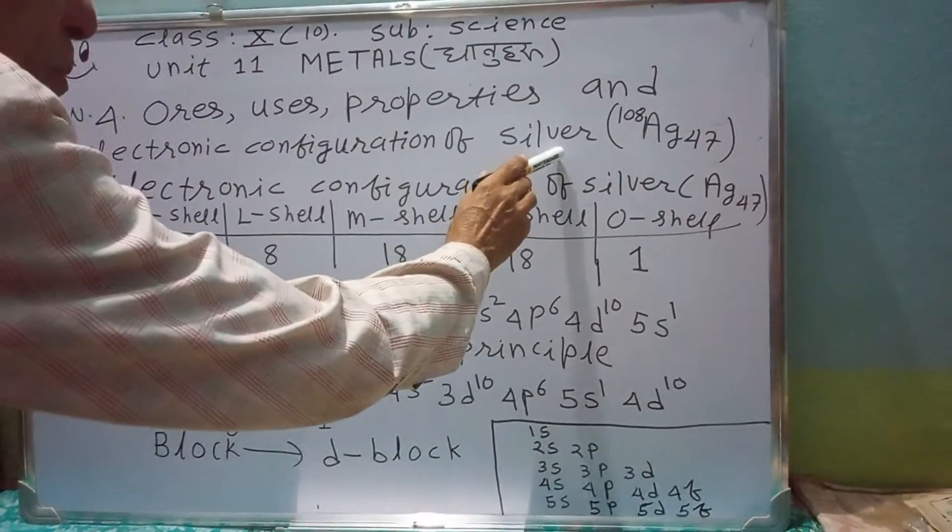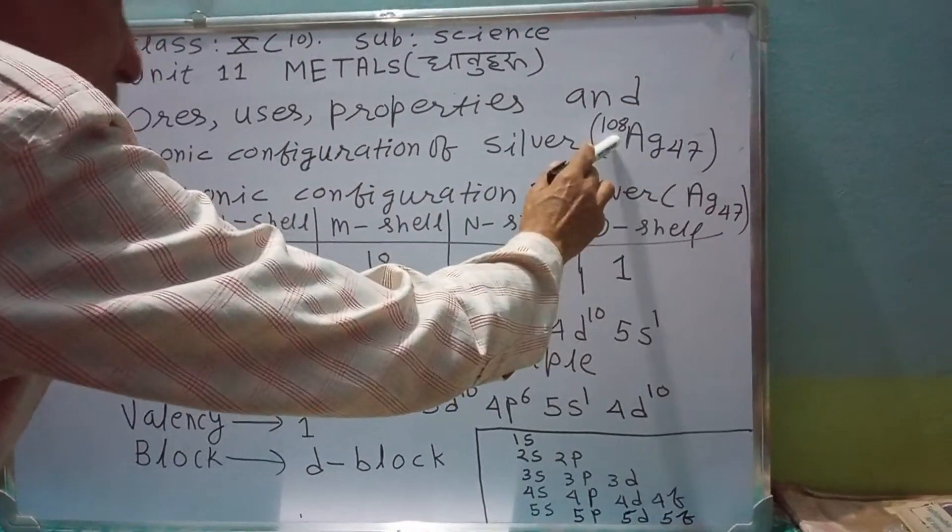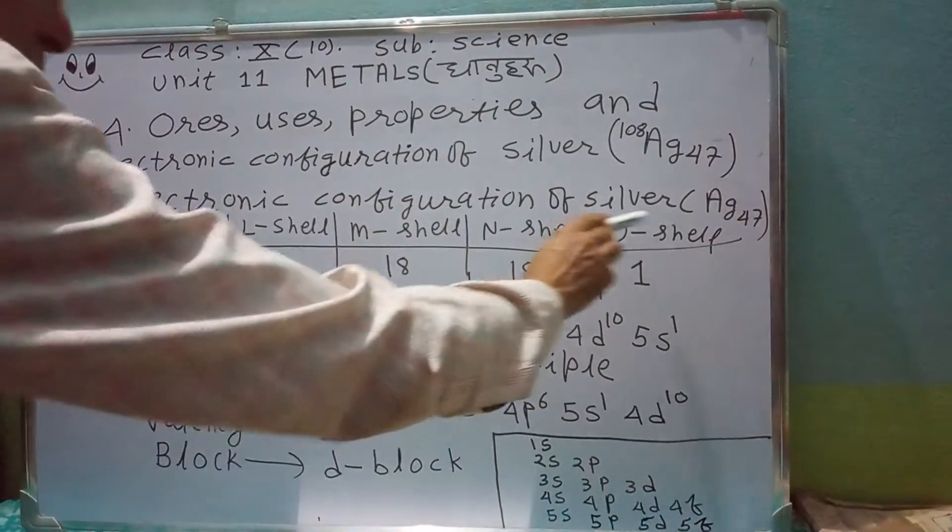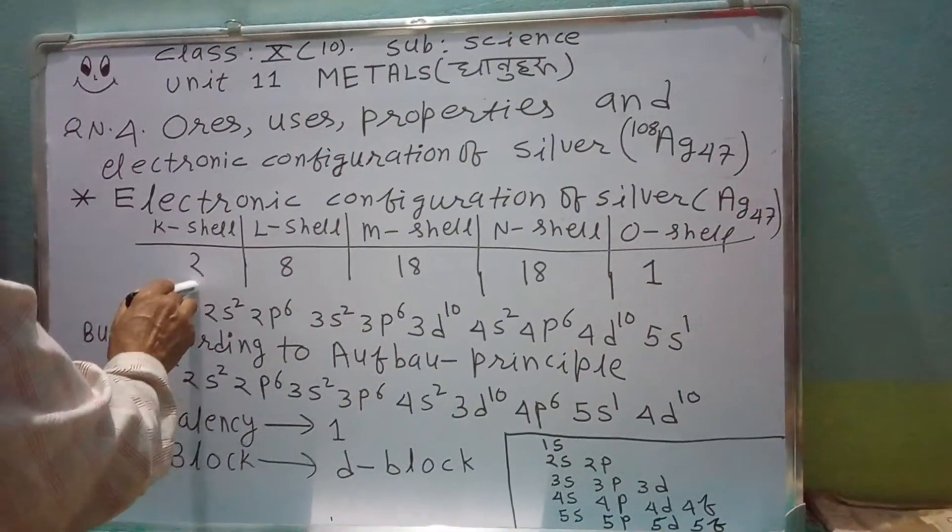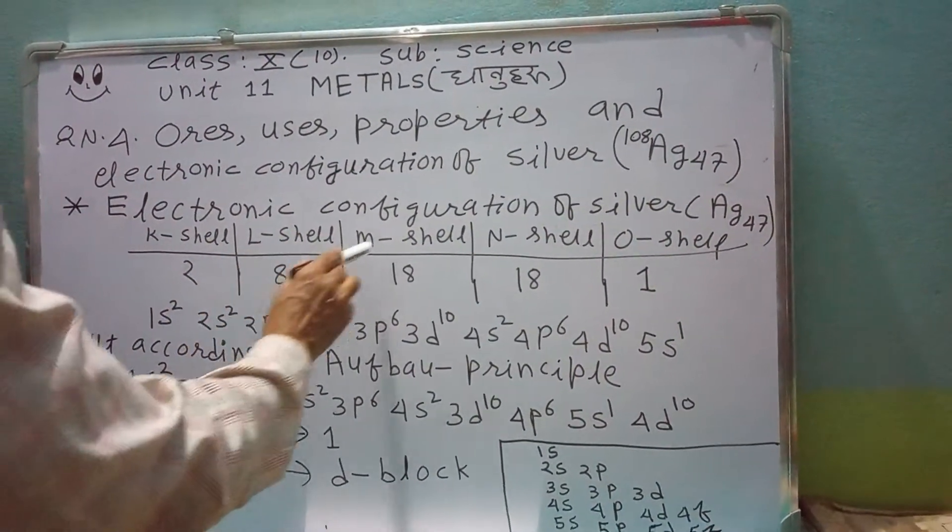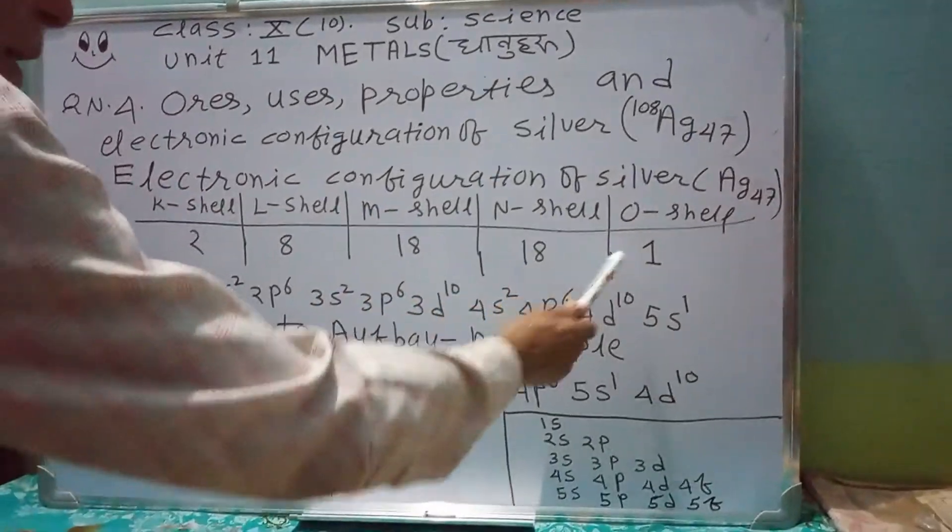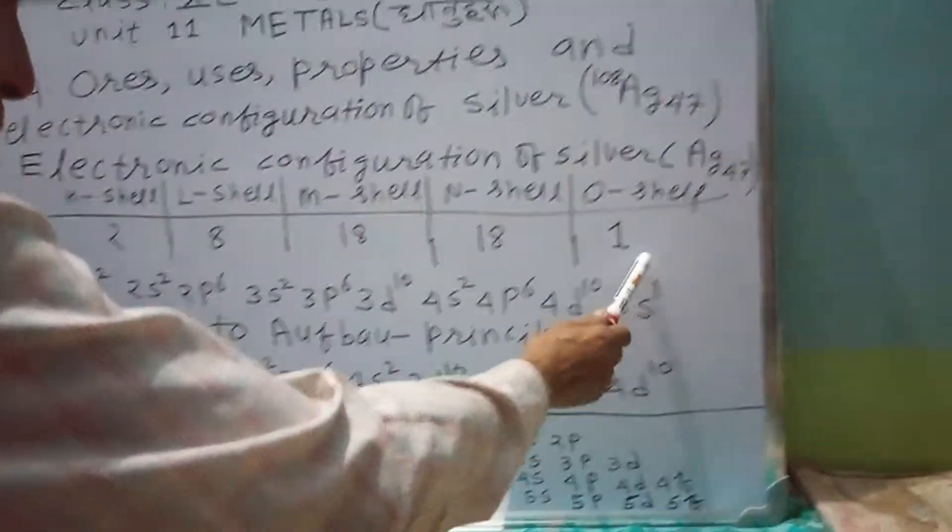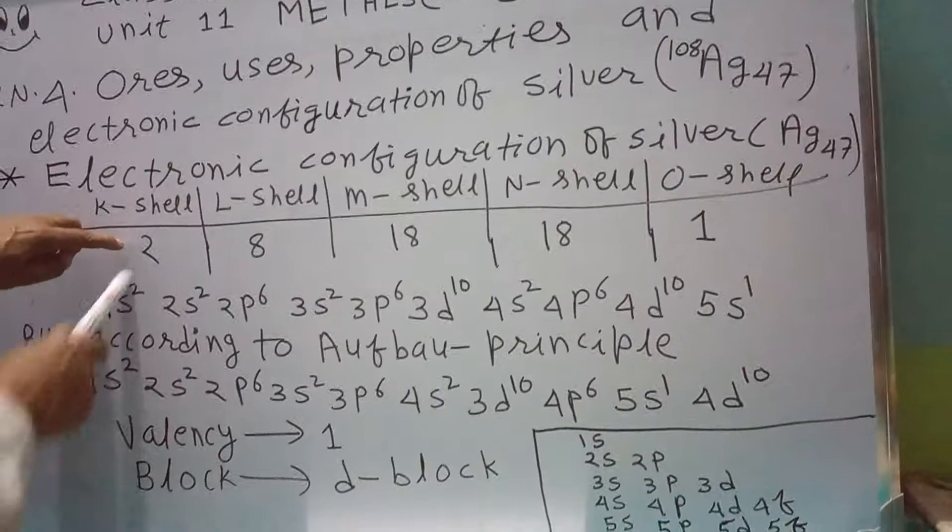Electronic configuration of silver Ag 47, atomic number 47, atomic weight 108. Electronic configuration: K shell 2, L shell 8, M shell 18, N shell 18, O shell 1.